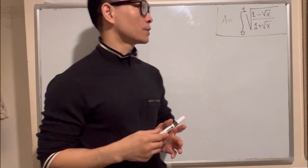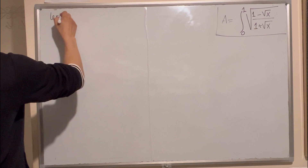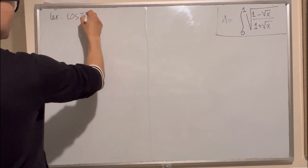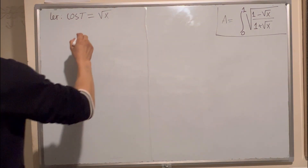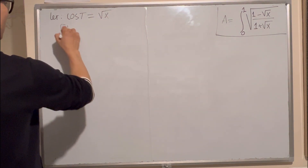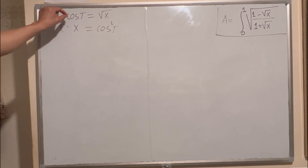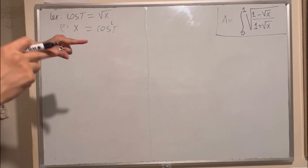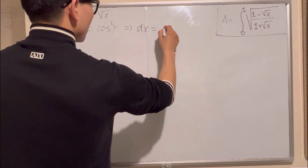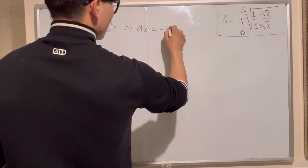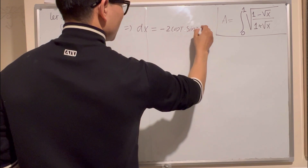So how I read off the square root: let cos t equal square root of x. So I got x equals cos²t — you do the square power for both sides. So you get dx will be equal to negative 2 cos t times sin t dt.